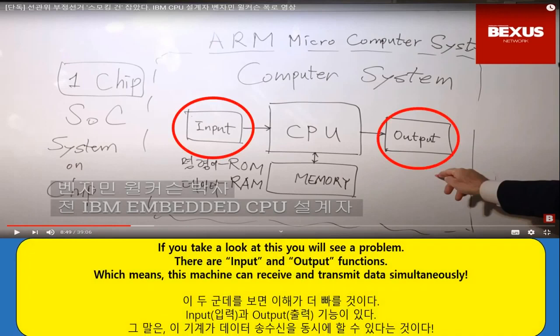If you take a look at this, you'll see a problem. There are input and output functions, which means this machine can receive and transmit data simultaneously.